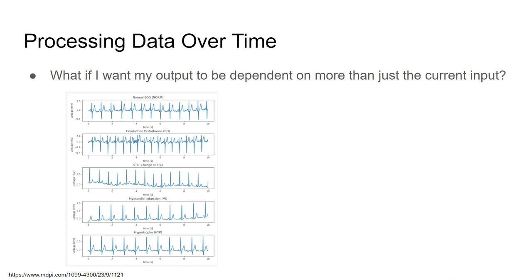Sometimes I might want the past to influence what I'm doing right now. For example, here's some data from an ECG signal — we're measuring some kind of heart rate, and we've got an electrical signal changing over time. Depending on what that pattern is over time, these are very different situations: this is a normal ECG up here, and there are a bunch of problematic situations down here. It would be nice to have systems that could detect and notice that.